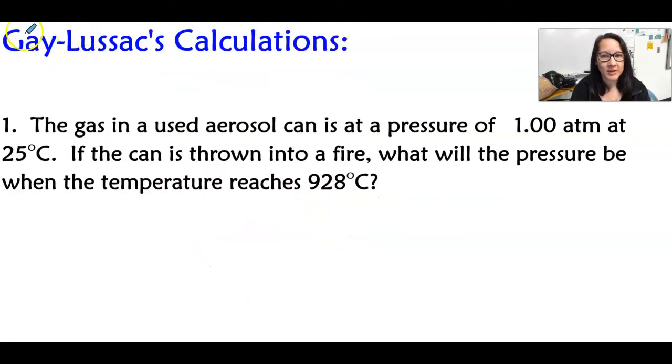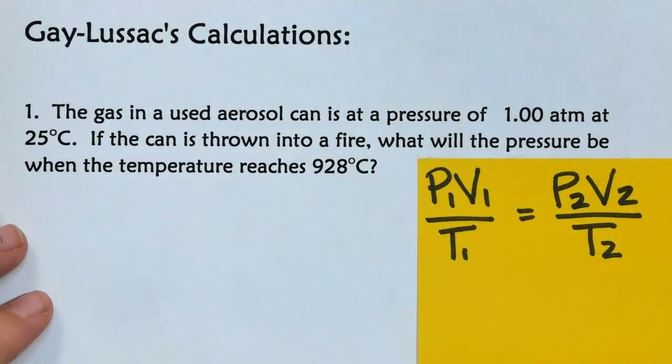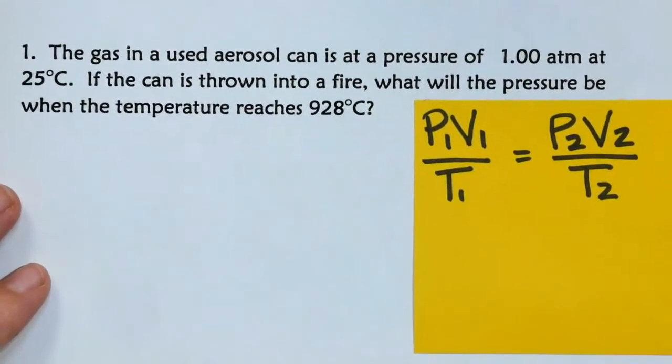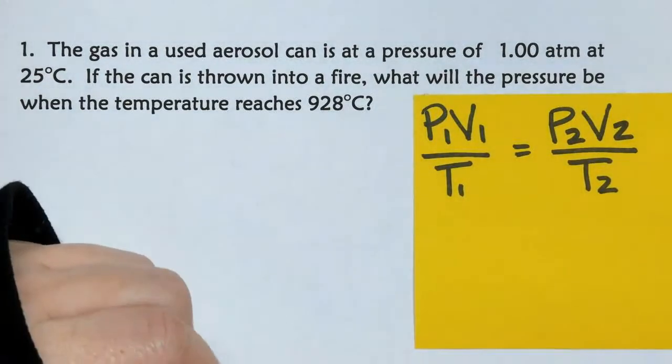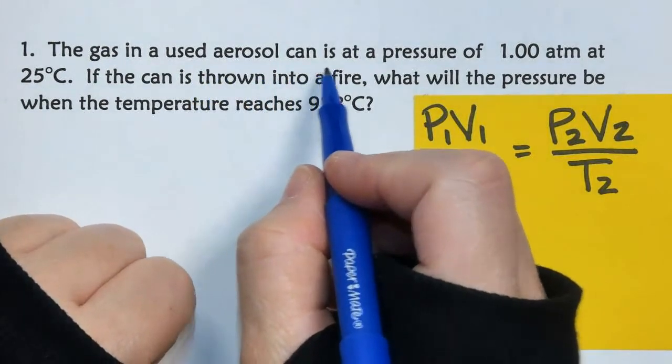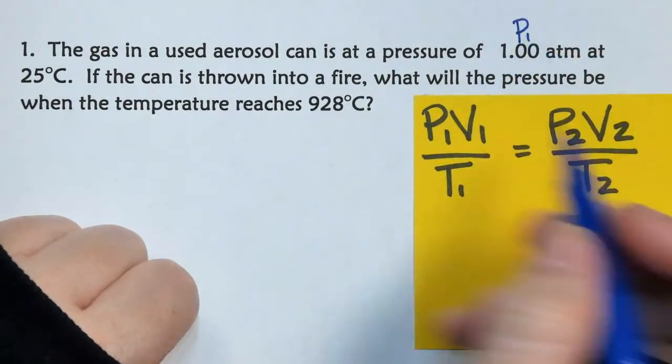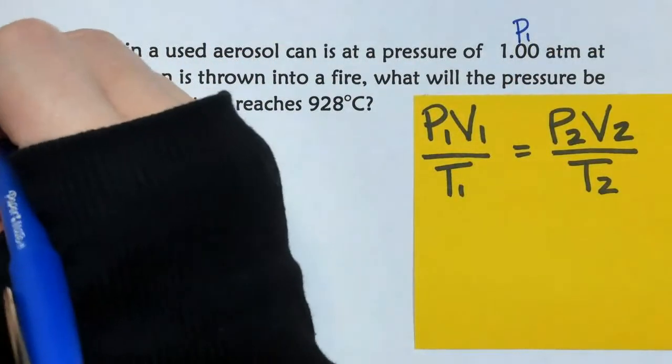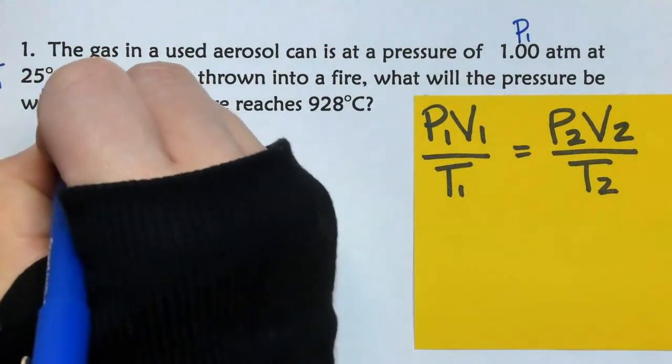So, we'll do some calculations now. So now let's look at some Gay-Lussac's law calculations, where we're going to use this equation, and let's label our variables in the problem. The gas in a used aerosol can is at a pressure of one atmosphere, so this is my P1, and it's at this temperature, that's going to be T1. Remember, Celsius plus 273.